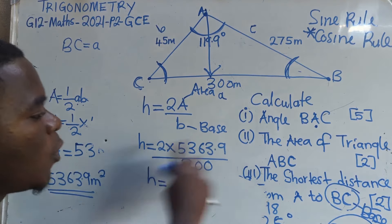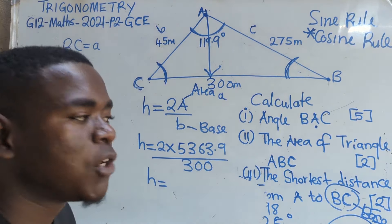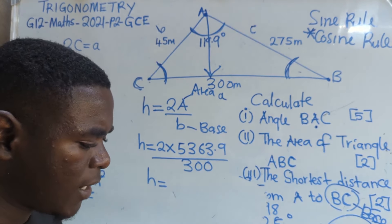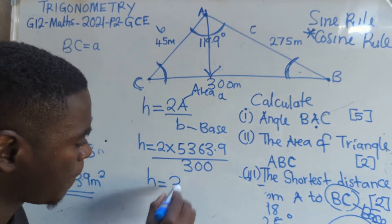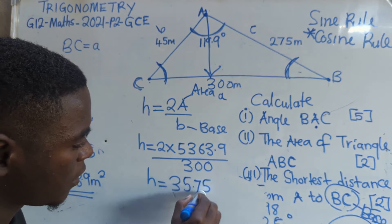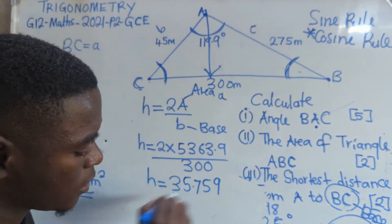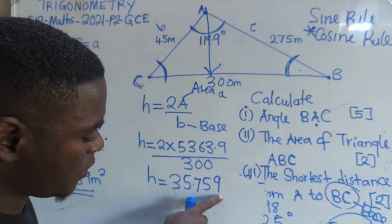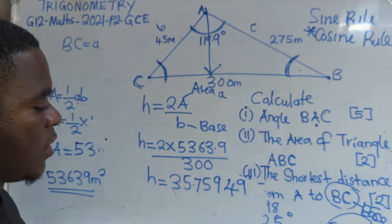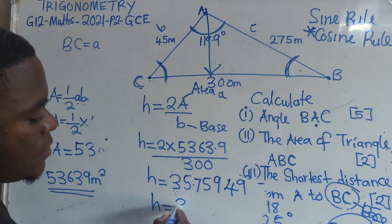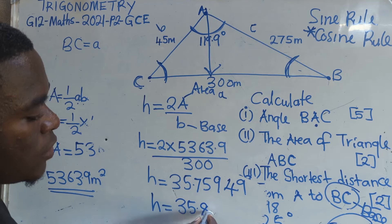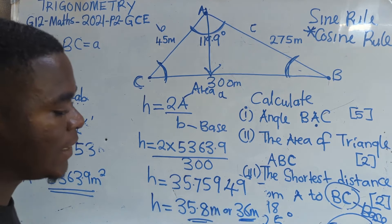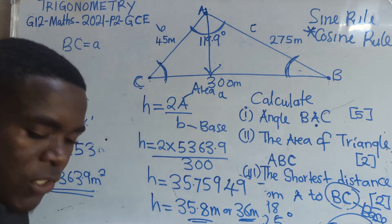After seeing this answer, then you say divide 300. The answer is 35.759 — so this is just the same as 35.8 meters. Or someone can write it as 36 meters — it is just one and the same thing. So this is the particular formula that you need to know and understand.